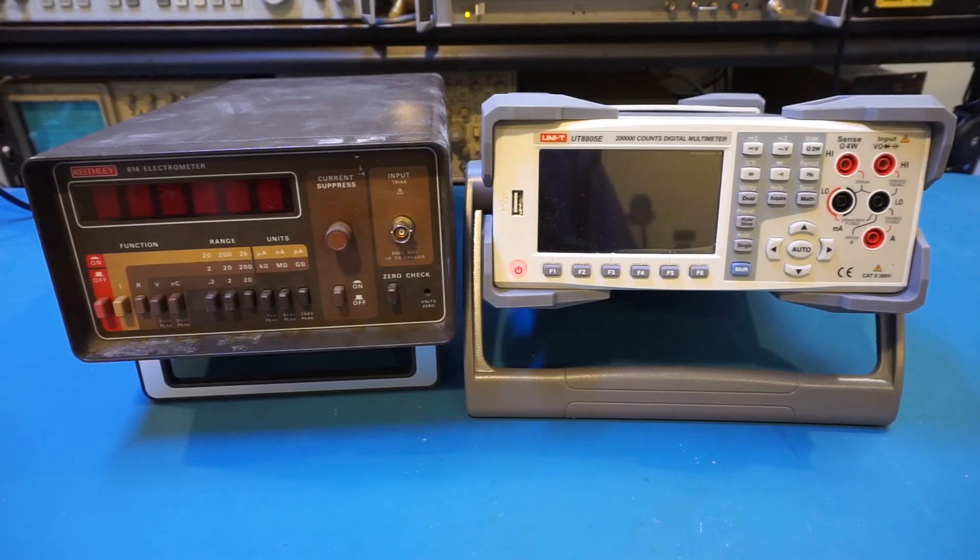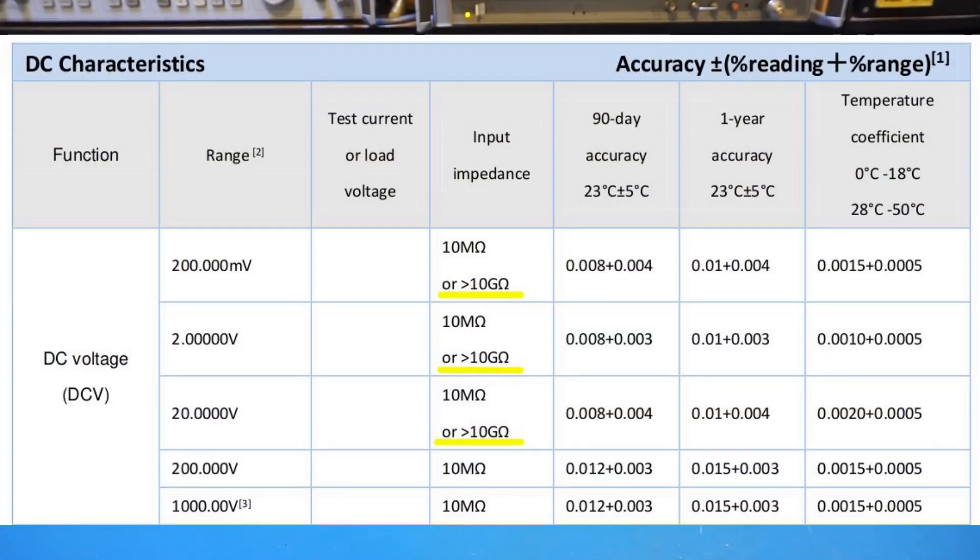Now, one specification that is very impressive is its input impedance in voltage ranges under 20 volts. According to the spec sheet, the input impedance is greater than 10 gigaohms in the 200 millivolts, 2 volts, and the 20 volts ranges.